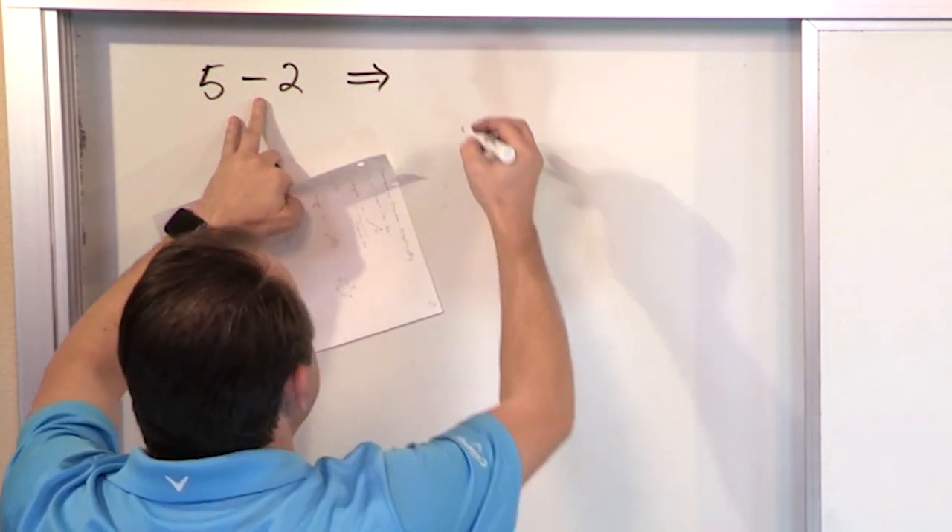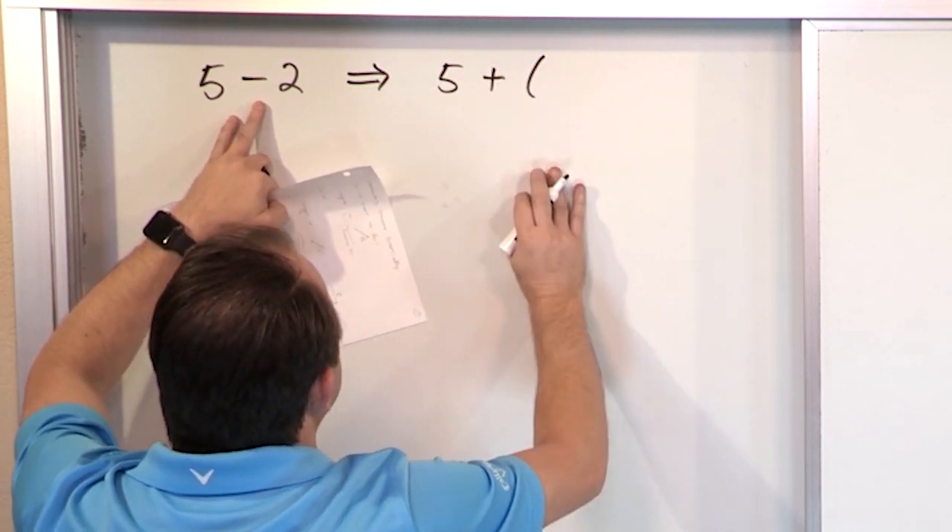But when you get into algebra, you learn that this is basically the same as the following. Subtraction of anything can be written as addition. Of what? Of adding what? Of adding a negative number.